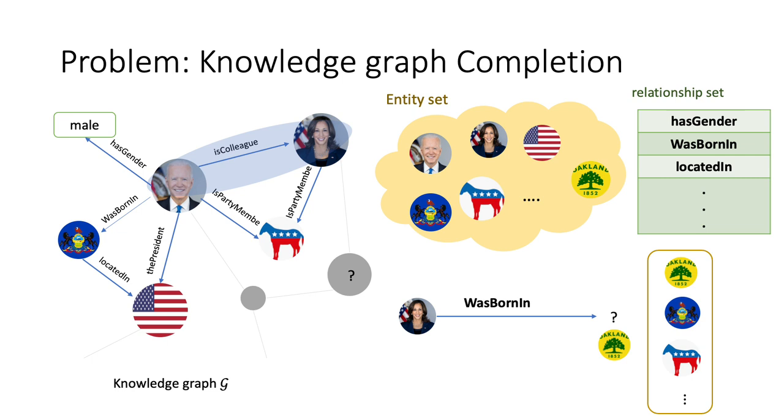Knowledge graphs always consist of a set of triples. For example, Joe Biden is a colleague of Kamala Harris. In this triple, we call Biden the head entity and Harris the tail entity.